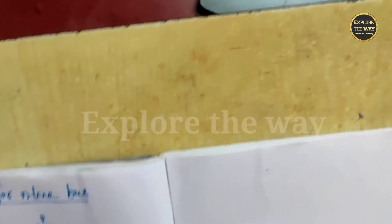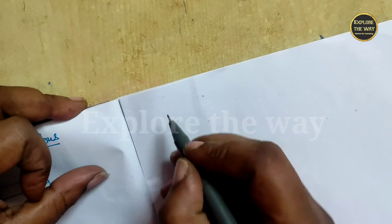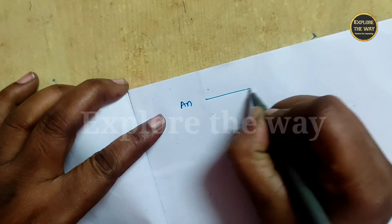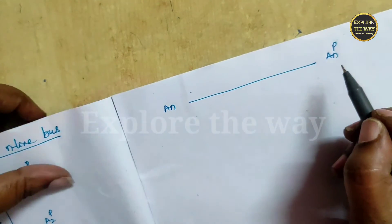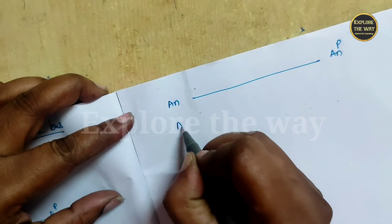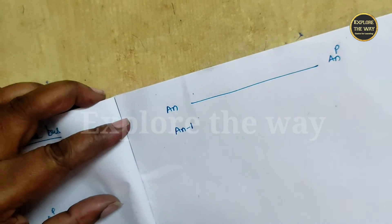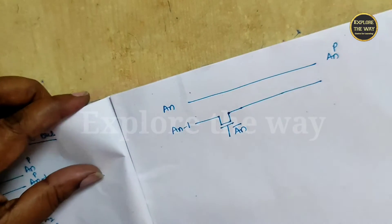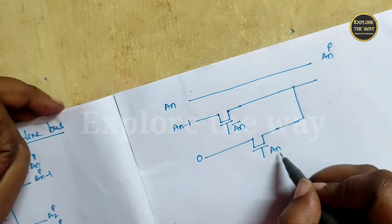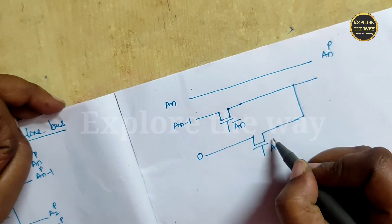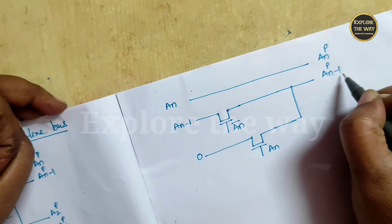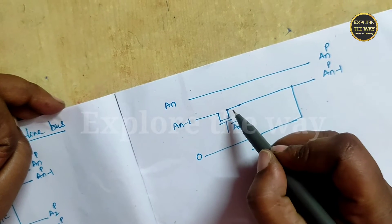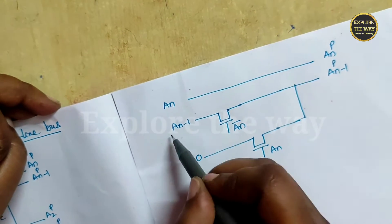To implement these equations, pass transistors can be used. The first statement is: an is 1, then access will be given to that particular input. If an-1 is accepted and an is 0, we can write it as an-bar. If an is 1, this transistor will turn on so an-1^p will be 0. If an is 0, then an-bar becomes 1, so this switch will be closed and an-1^p equals an-1.